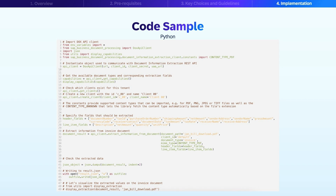First, you will need to import the required library along with the SAP Document AI SDK. After that, you need to create a client to consume this cloud-based service. You need to provide appropriate credentials to create this client.